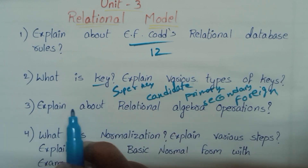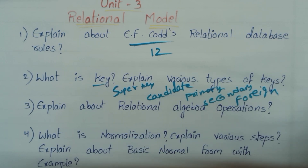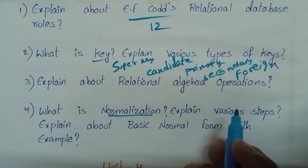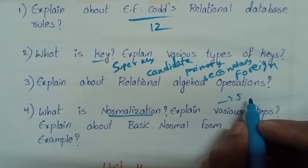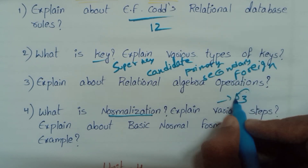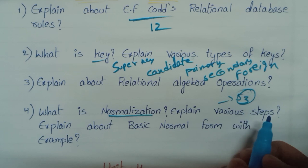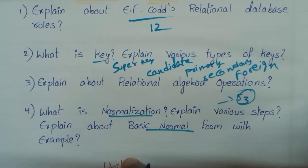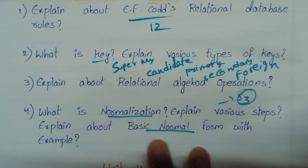Next, the third question: explain about Relational Algebra Operations. Next, Normalization — what is normalization and its steps? There are 5 normal forms in total, but we have prepared only the first 3 Normal Forms, which are very very important.